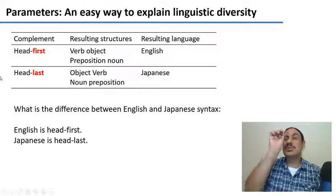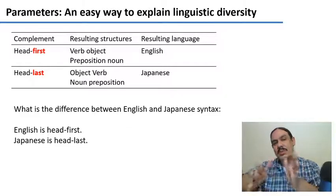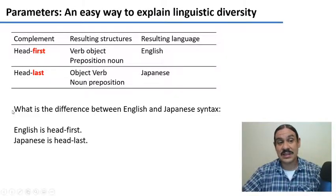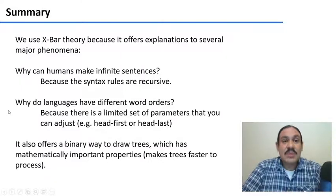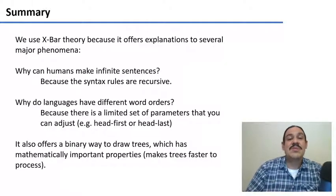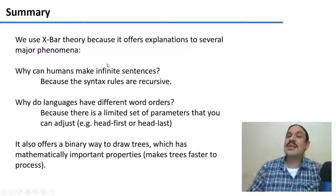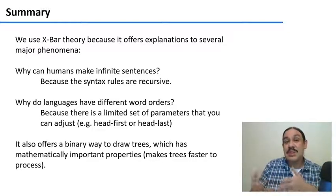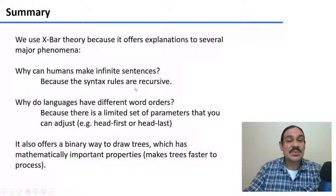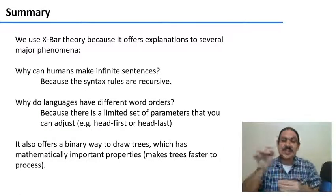So you can see that one way to explain a part of the difference between English and Japanese is that when it comes to complements, English is head first and Japanese is head last. And this tiny switch in one direction or the other determines where a lot of these structures are going to go, like in which order they're going to appear. So you can see that small changes in an X-bar tree can have a lot of ramifications in what a language looks like and how it's ordered.